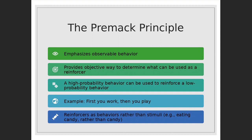The Premack Principle says that a high probability behavior can be used to reinforce a low probability behavior. You observe an organism and see what activities they choose to engage in freely, then use those high-probability activities to reinforce behaviors they don't choose to engage in. For example, if your child chooses to spend hours a day watching TV but only a short period doing homework, you can use watching TV as a reinforcer: 'If you do your homework, then I will allow you to watch TV.'